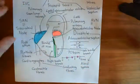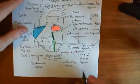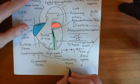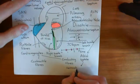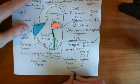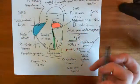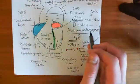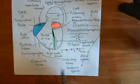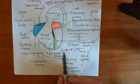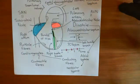That's ventricular systole — ventricular contraction. After ventricular systole, both the atria and the ventricles relax, and the heart returns to diastole. Then the whole process begins again when the sinoatrial node next beats. That's why it's called the cardiac cycle.